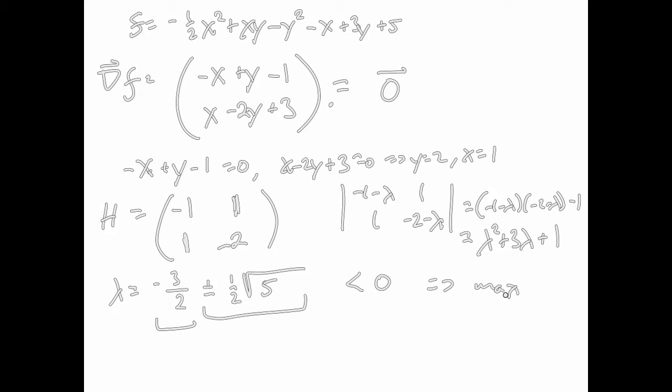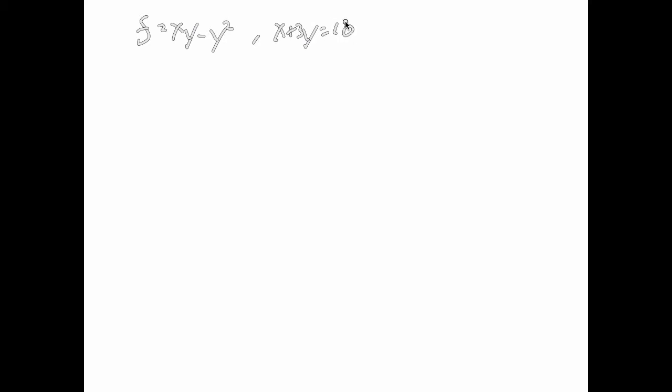Take a second to make sure that all makes sense, and then we're going to move on to the equality constraints. Now we're going to maximize f equals xy minus y squared with the constraint that x plus 3y equals 10. This is the same kind of budget constraint problem where you maximize utility subject to using your whole budget — units of x cost 1 and units of y cost 3, with 10 total dollars to spend. First step: write the constraint in the form equal to zero.